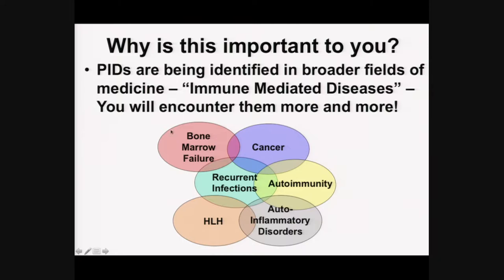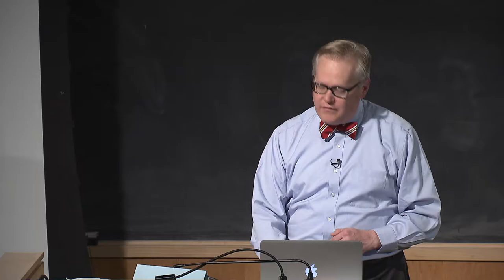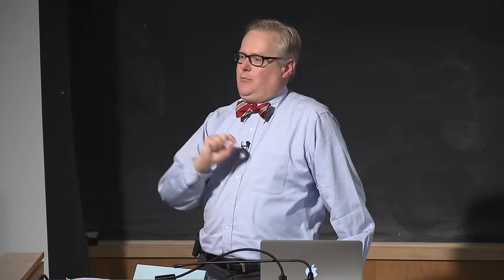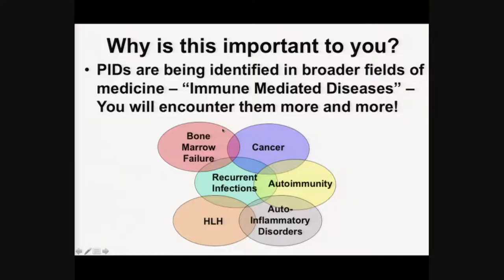These immune-mediated diseases include recurrent infections, autoimmunity, autoinflammatory disorders like periodic fever syndromes, primary hemophagocytic disorders, cancer — such as GATA2 deficiency predisposing to cancer — and bone marrow failure disorders. Some germline defects causing immunodeficiency have also been found as somatic mutations in tumors, which is a fascinating and blossoming field.